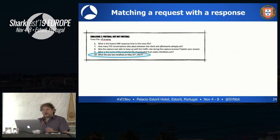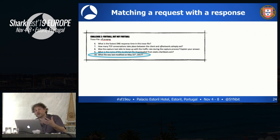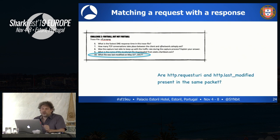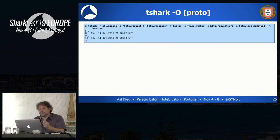When processing a capture file, the question was: what file was last modified on May 15th, 2017? This means I need the request — because the URI is in the request — and the response contains the 'If-Modified-Since' date. I need to make a match between a request and a response, which Wireshark normally doesn't do. There are many cases where Wireshark can't match those, and it's good to have a mechanism to match two pieces of information that are not in the same packet.